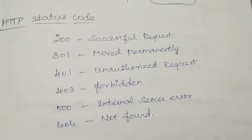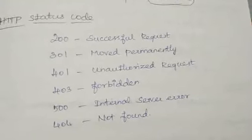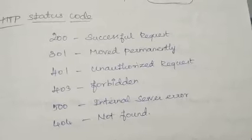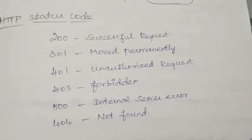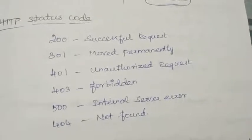Next is 301. The request message has moved to a new URL. That means moved permanently. Next is 401. The request page needs a username and password. That means unauthorized request.